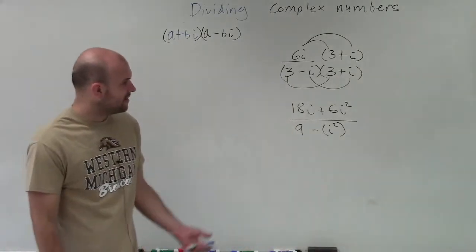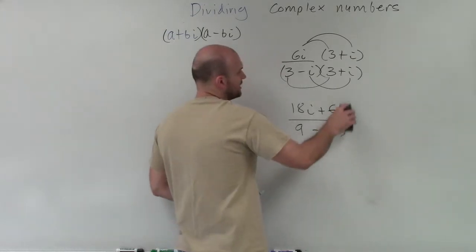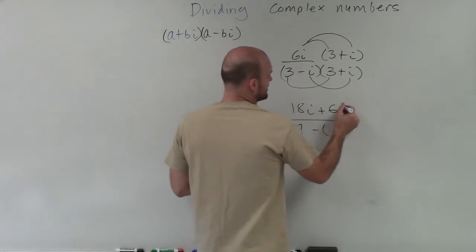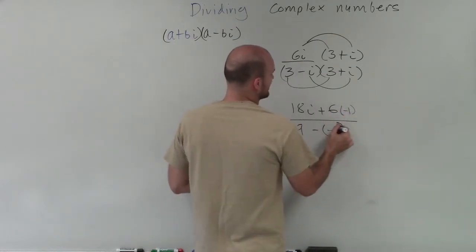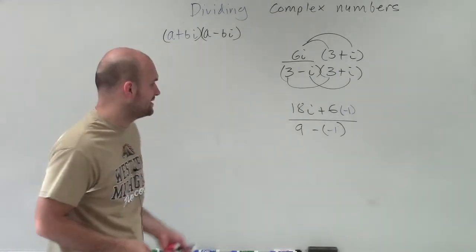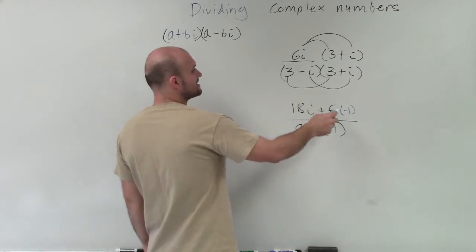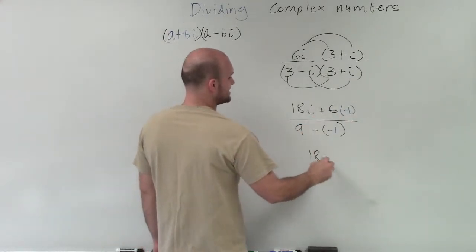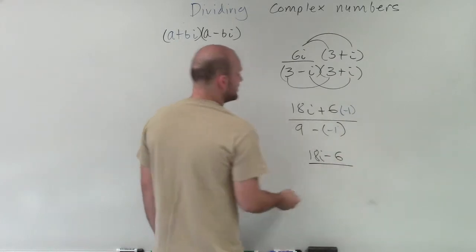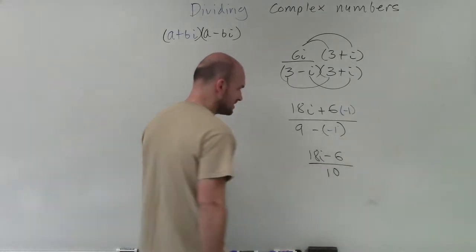So now, what I like to do is just rewrite all my i squareds as negative 1. I don't like to do this all at the same time as other products, because I notice a lot of times I'll make a mistake, and I'll see a lot of students make mistakes. So I don't have a problem writing i squared and then rewriting them as negative 1. Because now I can see this is going to be 18i plus 6 times negative 1, so that's going to be 18i minus 6. And then over here, I'll have 9 minus a negative 1, which becomes 10.